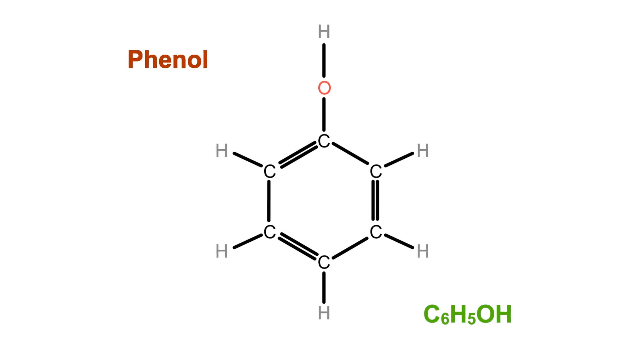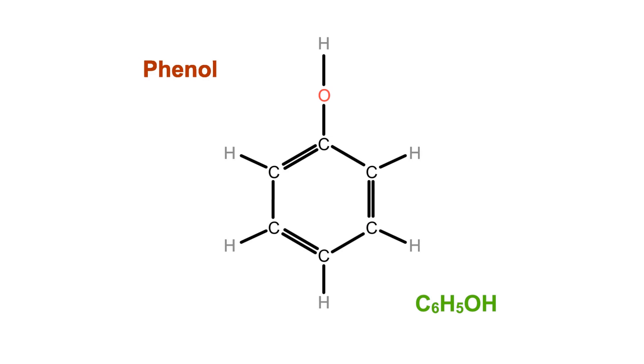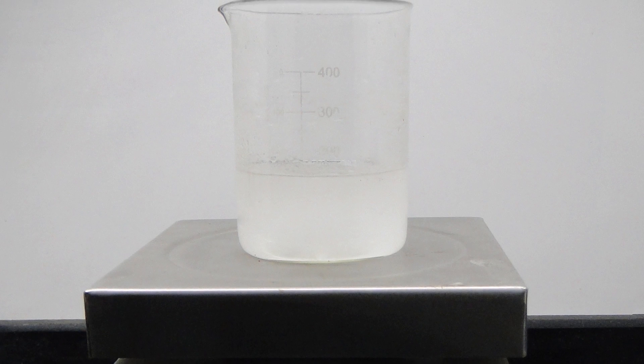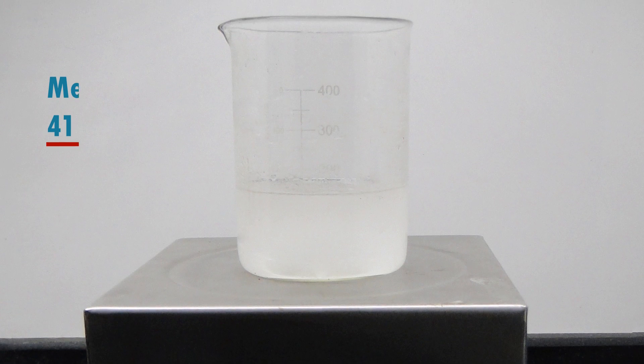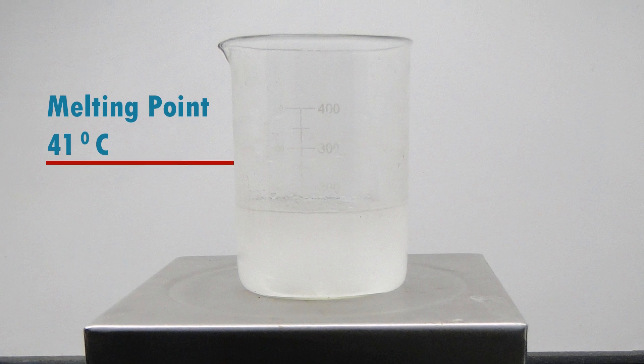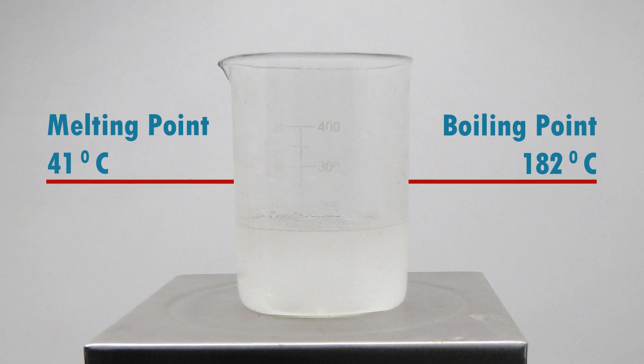The chemical formula of phenol is C6H5OH, and as a solid it is a white crystalline compound. Its melting point is 41 degrees celsius and its boiling point is 182 degrees celsius.